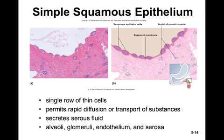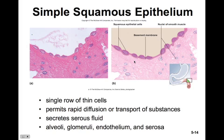Simple squamous epithelium shows a single row of thin cells in histology preparations — we'll see the actual slide and a faded version to help identify the cell type. These thin cells permit rapid diffusion and transport of substances. They often secrete serous fluids and are found in places like the alveoli, glomeruli, endothelium, and serosal layers.